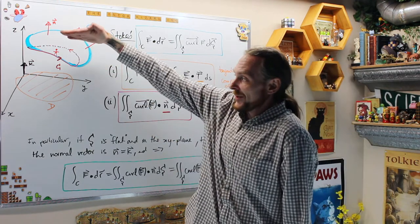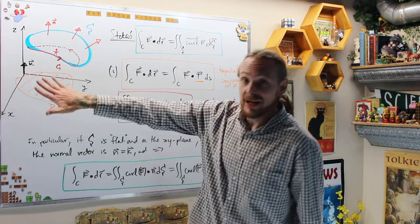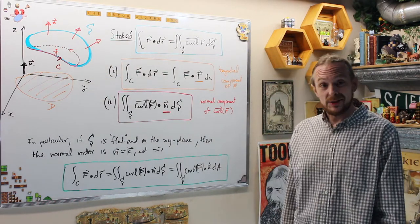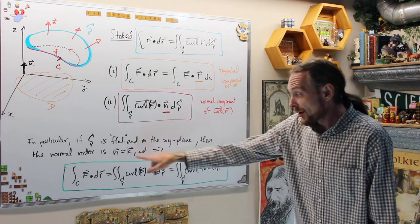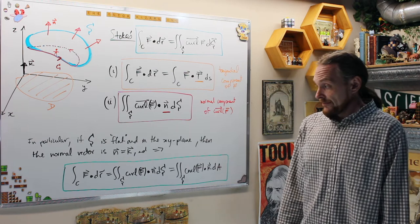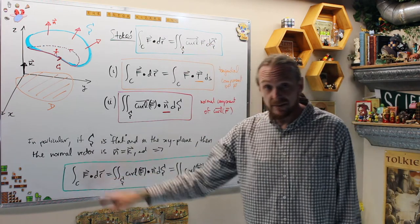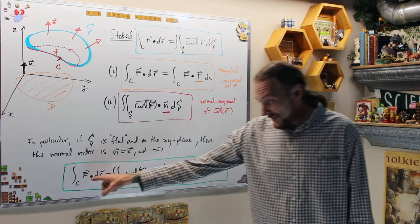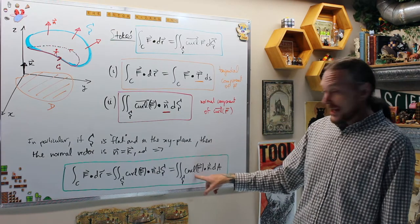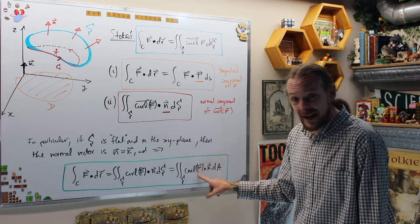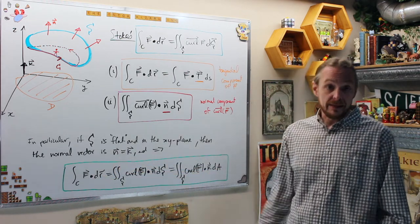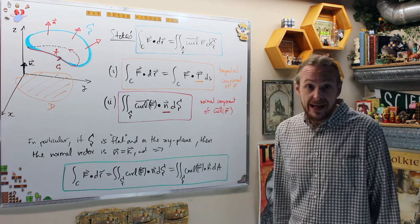If we take that surface and flatten it out, squishing it back into the xy-plane, then S would become a region D in the xy-plane as our surface. The normal component to that is going to be the vector in the direction of the z-axis, k = (0, 0, 1). That gives us the derivation: the line integral over the vector field equals the surface integral of curl of F dot n, which equals the surface integral of curl of F dot k. Taking out the middleman, this is the statement of Green's Theorem — so Stokes Theorem is a higher-dimensional analog.